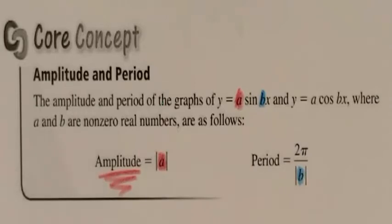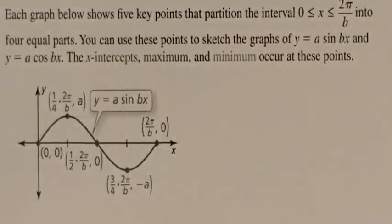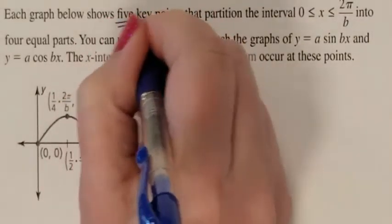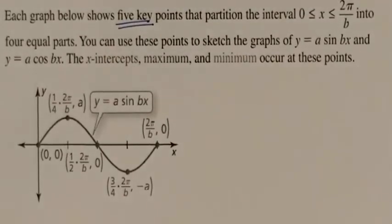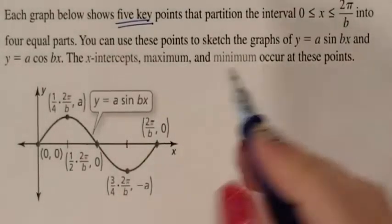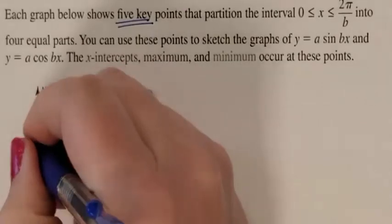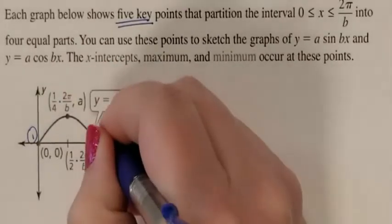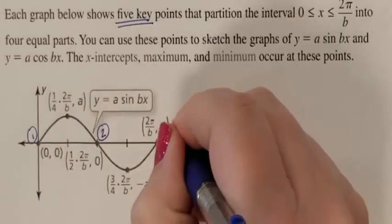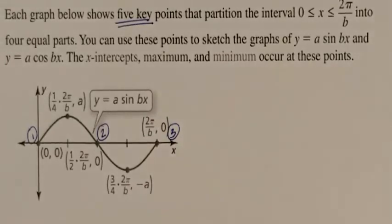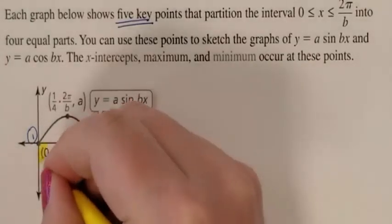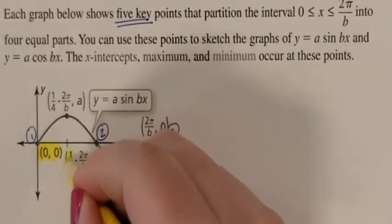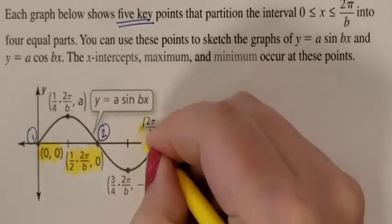You also have five key points that you need to be familiar with. First, you need your x-intercepts. Notice sine has three x-intercepts. So key point 1, key point 2, key point 3. Your x-intercepts are (0,0), this formula, and this formula. Those are our three key points.